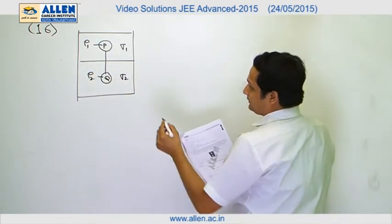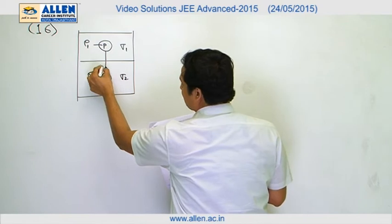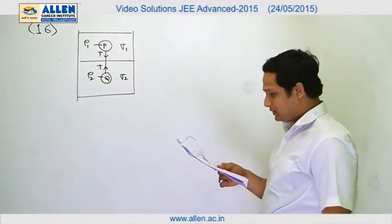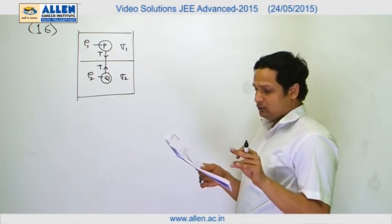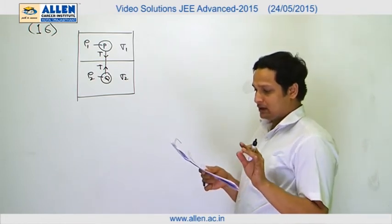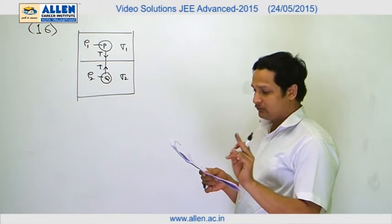They float in equilibrium, that means tension remains taut. If sphere P alone in L2 has terminal velocity Vp and Q alone in L1 has terminal velocity Vq.